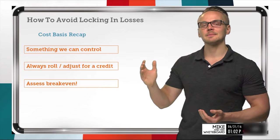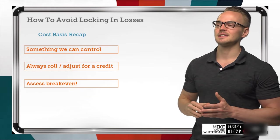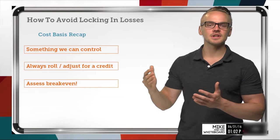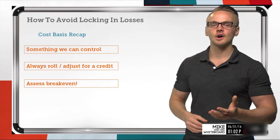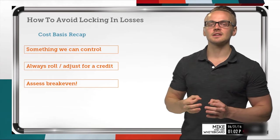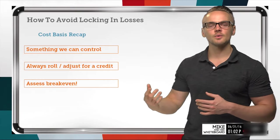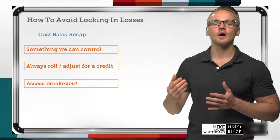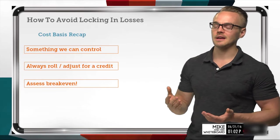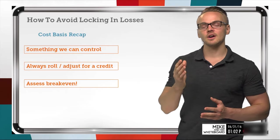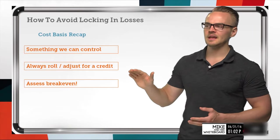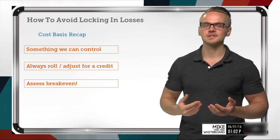Yes, selling a call caps upside potential, but cost basis is something we can control. If I'm bullish on an underlying, I might enter a covered call or sell a naked put. I never know where the market or implied volatility is going to go — those affect option price and overall P&L — but if I focus on something I can control like cost basis reduction, I'm going to put myself in a good position.